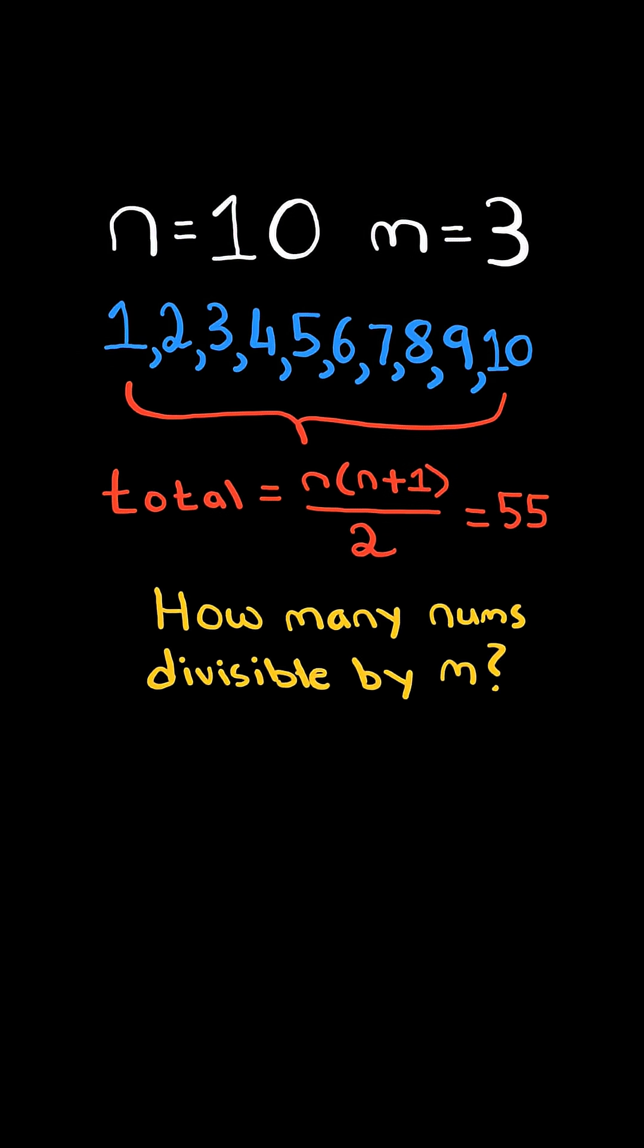Now, how many numbers from 1 through n are divisible by m? The amount of numbers is equal to n divided by m.